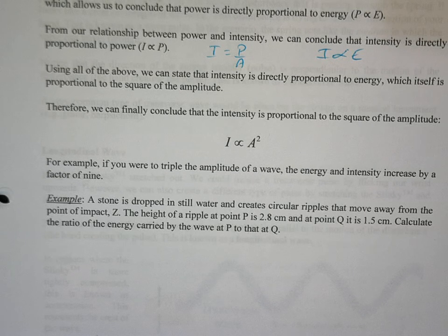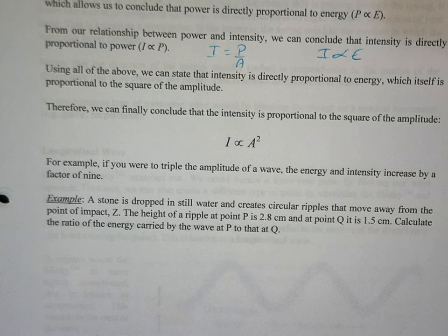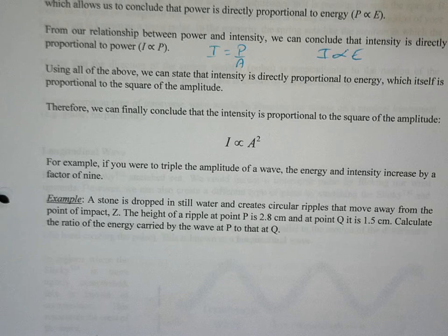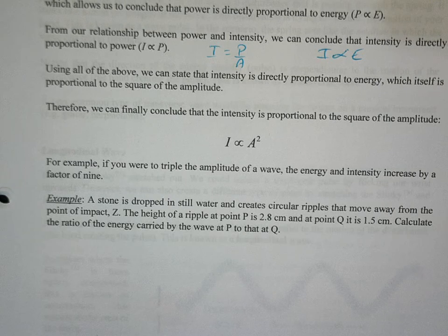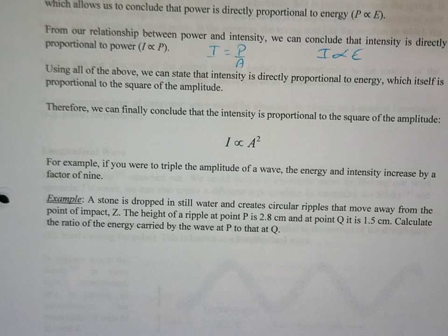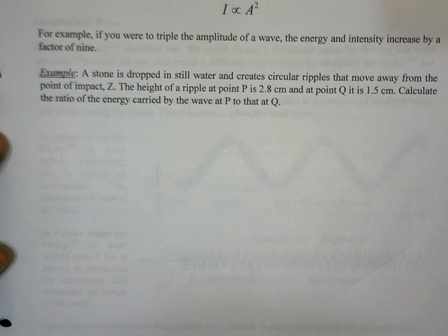If you do more advanced physics, you'll work out that relationship in more detail. But for IB, all you need to know is that it's a squared relationship. So if you triple the amplitude, the energy and intensity increase by a factor of 9. Let's look at some examples.